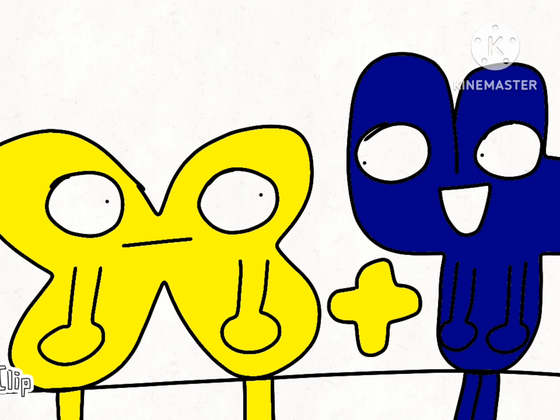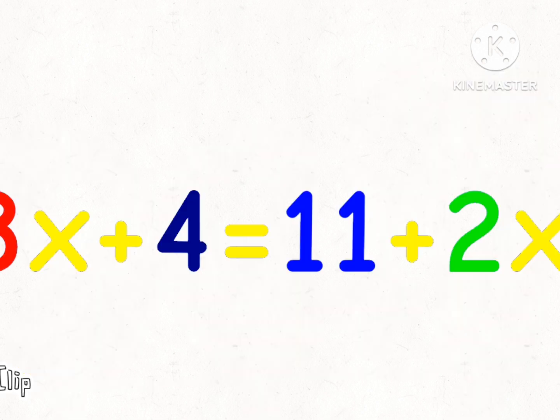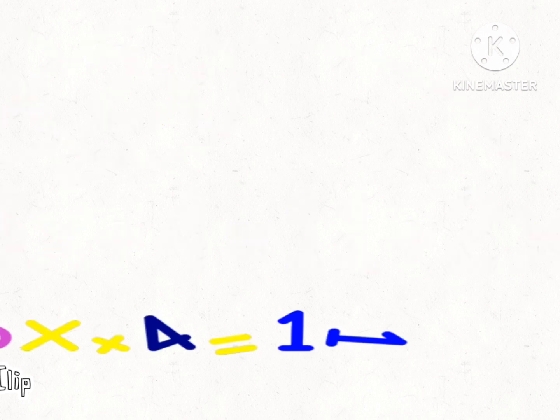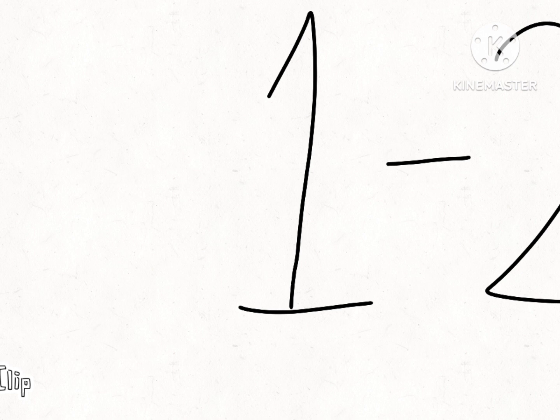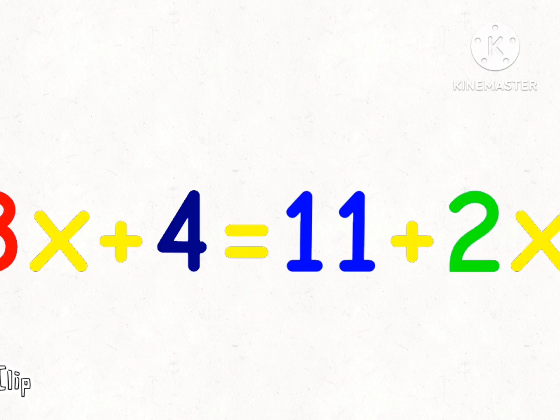Now we have to move things around. We have to move this two x to this side. So five x. Oh! Whenever you switch sides, you have to switch signs. So if it's positive, it turns negative, and vice versa. Why? Think of it this way. You're subtracting two x from each side. So it'd be just one x, or x. Correct.